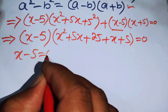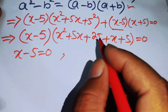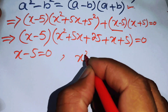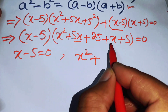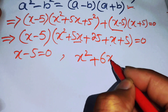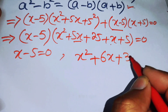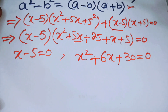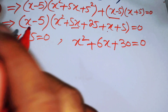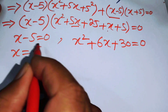Combining inside the bracket: 5 squared is 25, and combining like terms gives x squared plus 6x plus 30. So the equation factors as (x minus 5)(x squared plus 6x plus 30) equals 0. The first root is x equals 5.